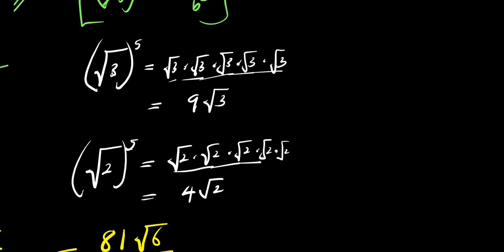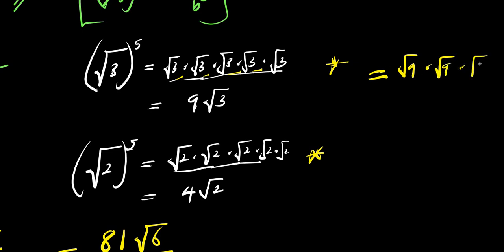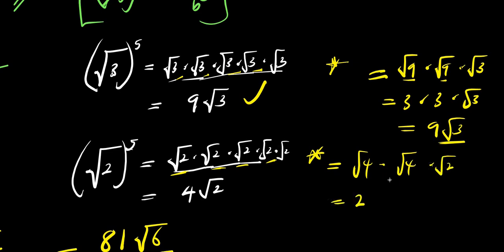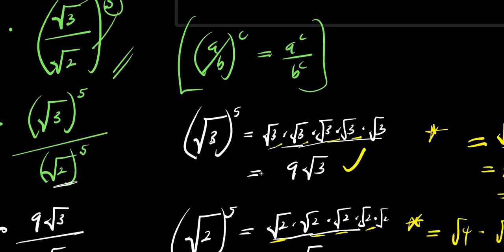Now, in case you find it difficult to understand the earlier steps: root 3 times root 3 is root 9, then root 3 times root 3 is another root 9, and we have one more root 3. So root 9 times root 9 — root 9 is 3, times root 9 is another 3, times root 3 — so 3 times 3 is 9, times root 3, giving 9 root 3. Similarly for root 2 to the 5th: root 2 times root 2 is root 4, times root 2 times root 2 gives another root 4. Root 4 is 2, times root 4 is 2, times root 2 gives 4 root 2. That is how we obtained those values.